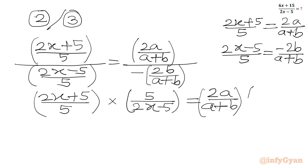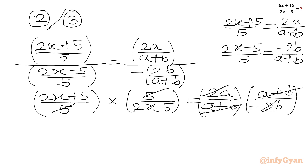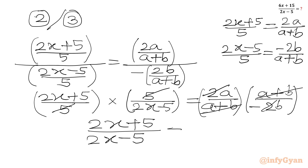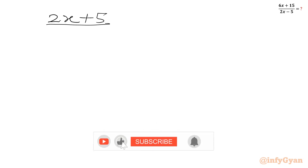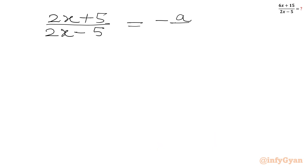We will flip the denominator fraction: (2x + 5) times (a + b) divided by (2x - 5) times (-2b). Now we cancel (a + b) with (a + b), 2 with 2, and 5 with 5. So we get (2x + 5)/(2x - 5) = -a/b.